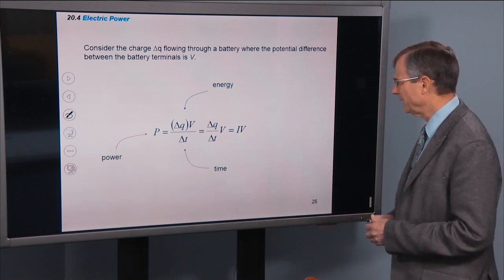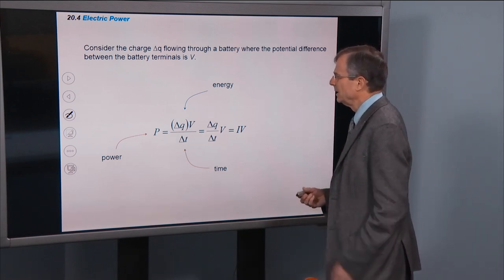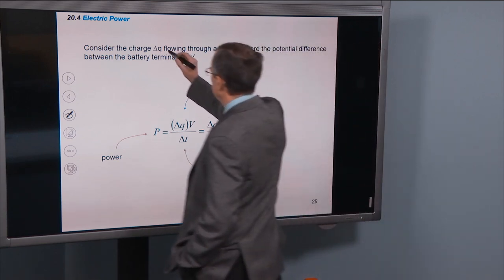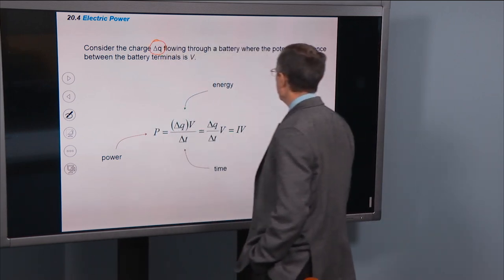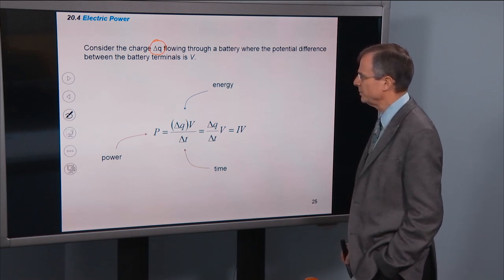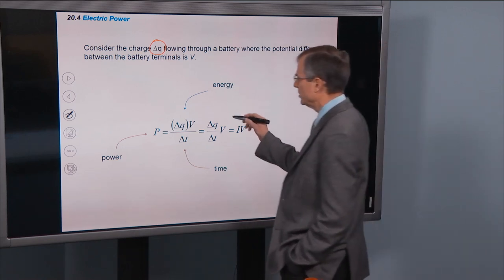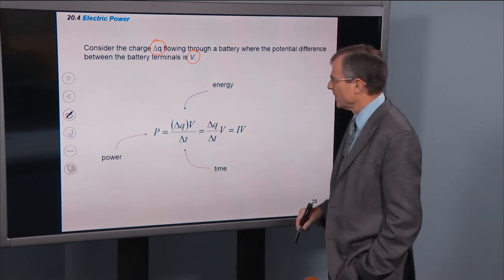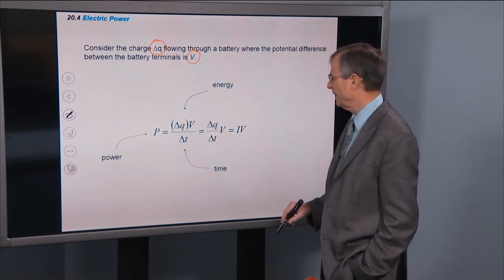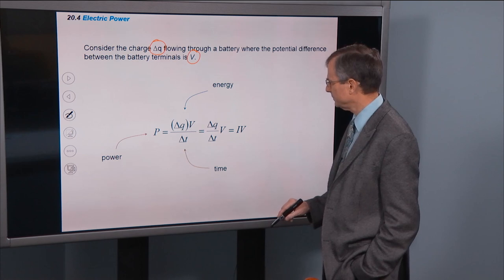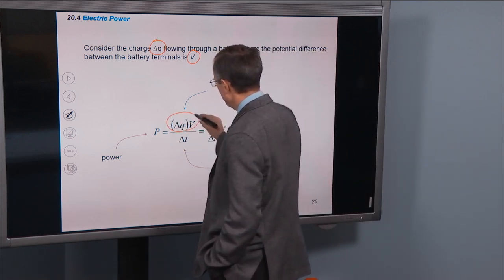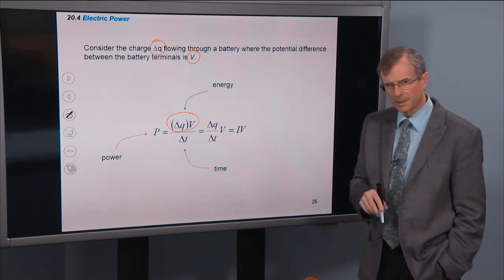So just to give a hint about where this is coming from, let's consider the charge, delta Q, flowing through a battery where the potential difference between the battery terminals is V. What power do we have going on here? Well, the energy, if you remember that concept that we talked about a couple of sections ago...